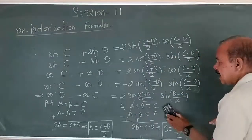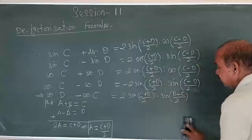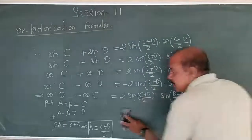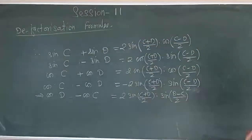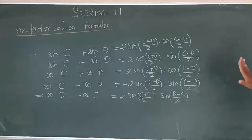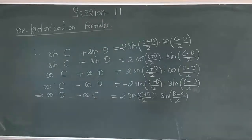So these are the de-factorization formulas — the formulas involve C and D, where C minus D and C plus D are used throughout.